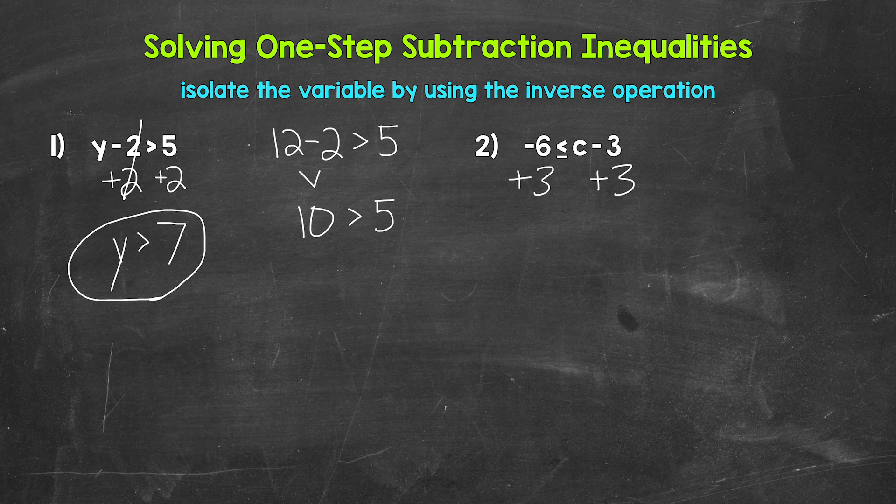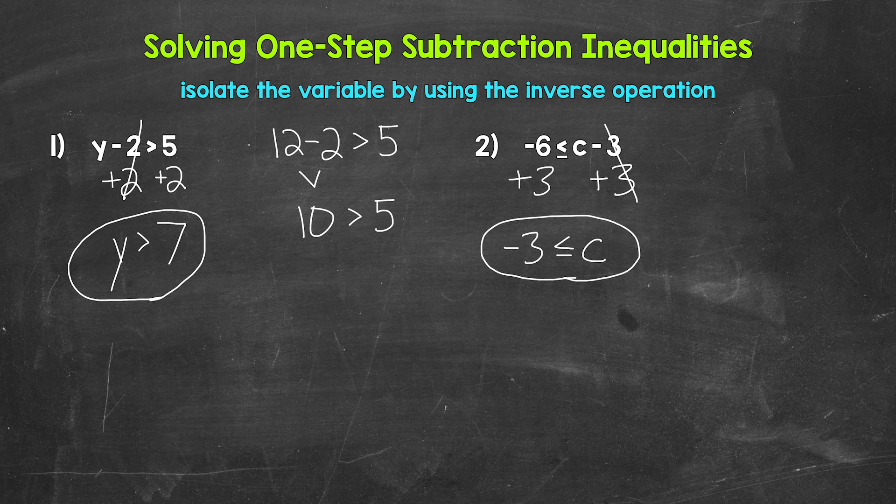As far as the right side, these threes cancel each other out. C is now isolated. So we have C is greater than or equal to, and then on the left side, negative six plus three gives us negative three. So C is greater than or equal to negative three.